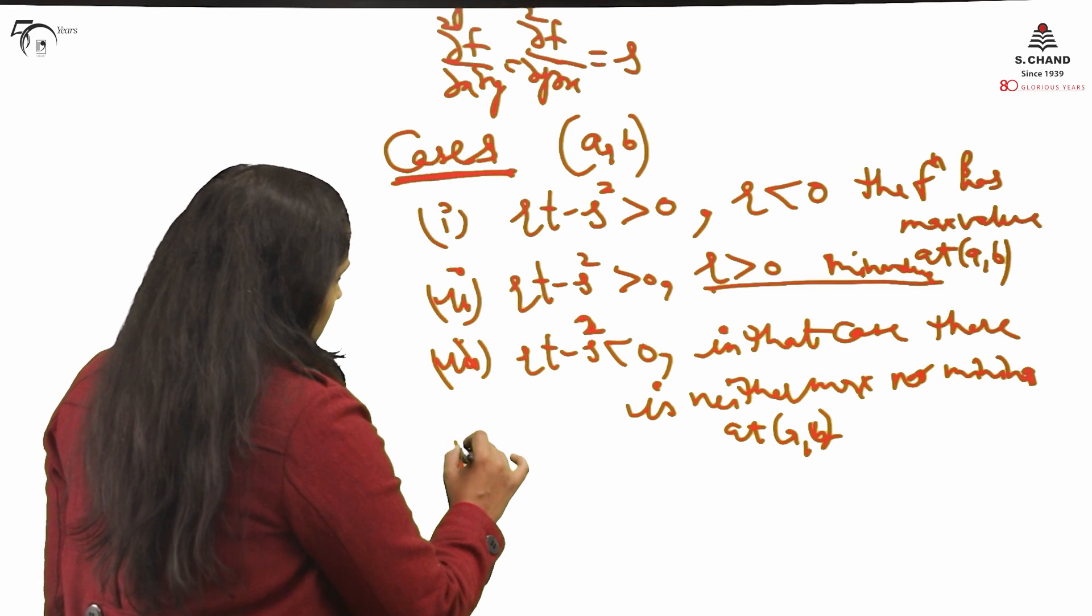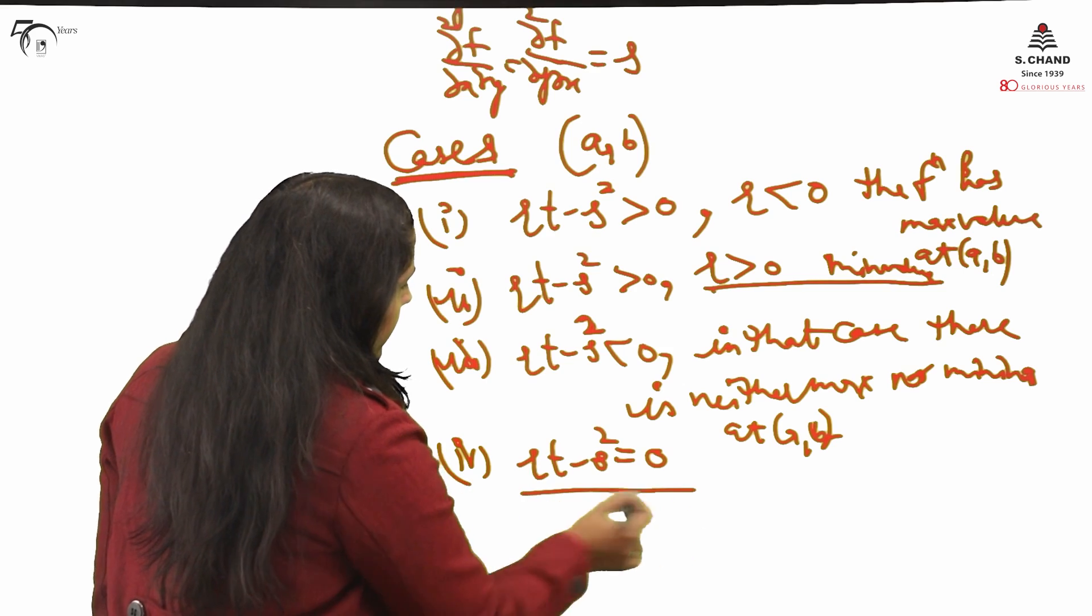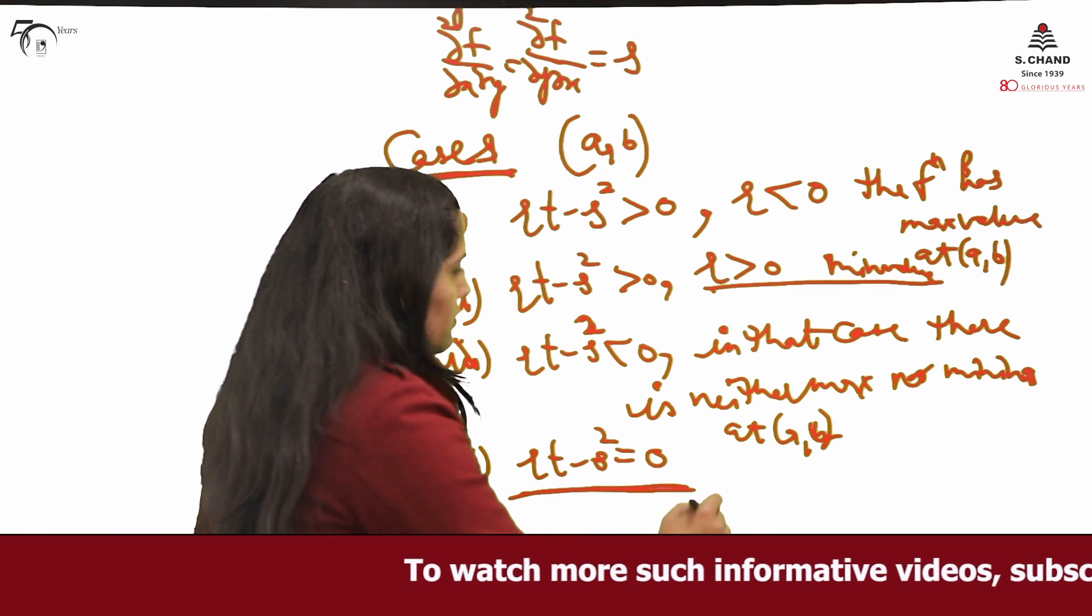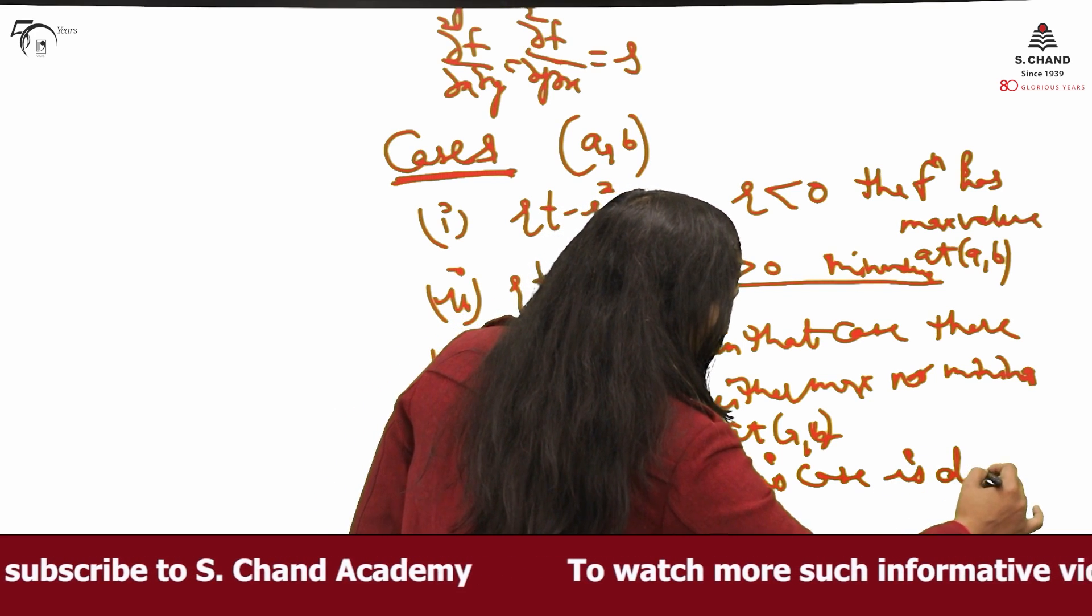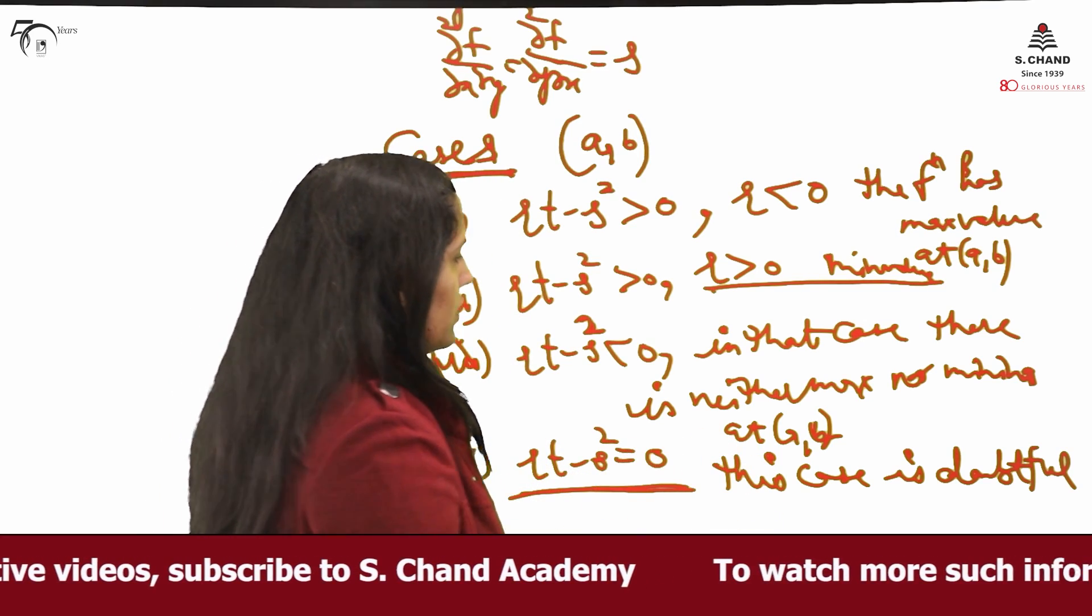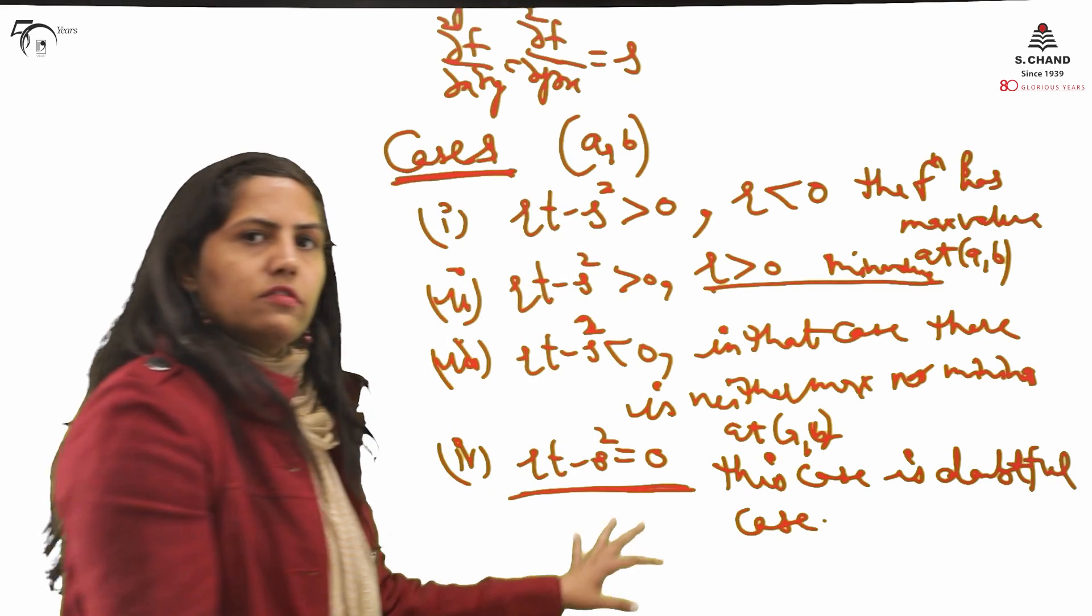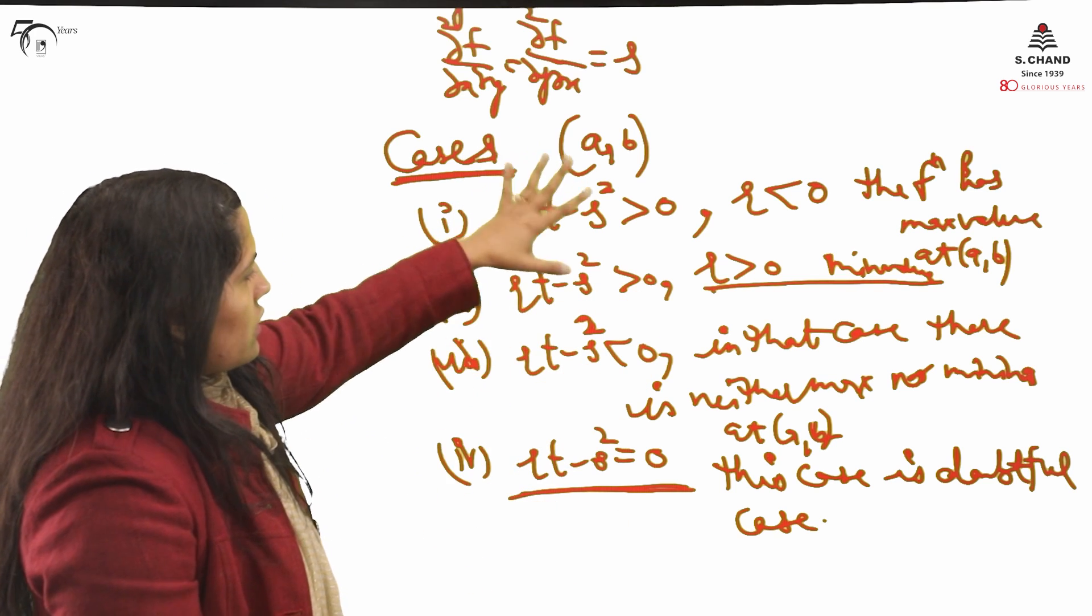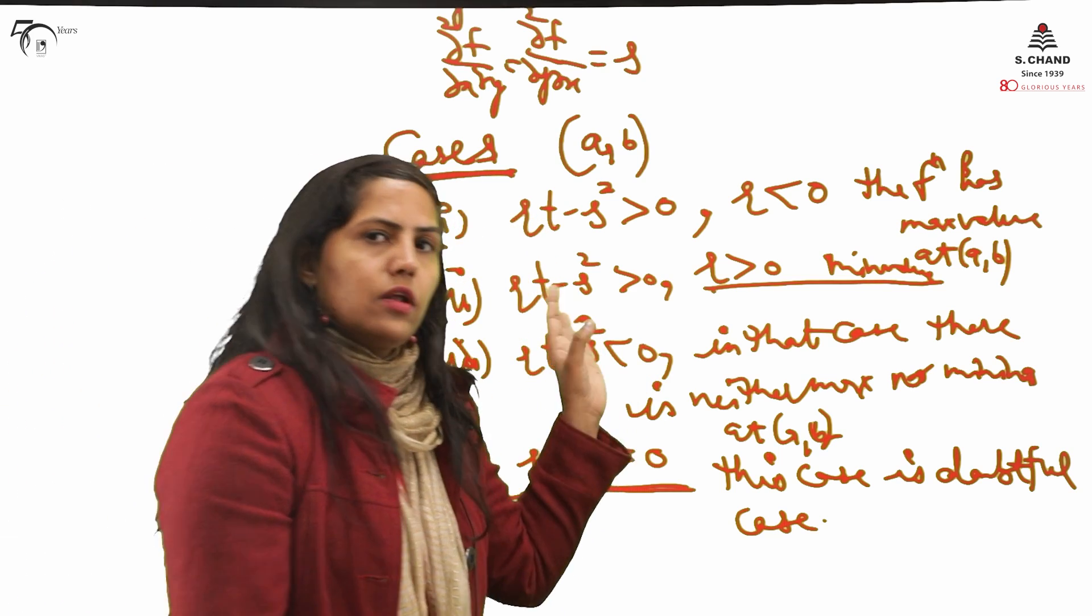Number 4: if in case you are getting it as 0, for such case there is no observation. It means this case is doubtful. Nothing can be said actually. This is a doubtful case. It means you cannot decide what the situation is exactly. They leave it because we cannot discuss or we need some further tools to check what situation basically at that point.